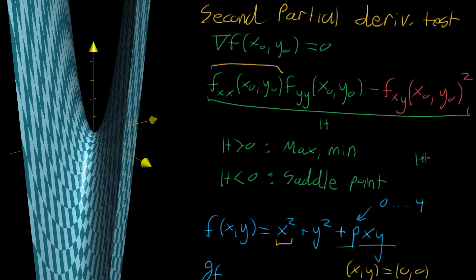Almost all cases, you'll find h is either purely greater than zero or purely less than zero. As an example, let's apply this to our specific function where p is some constant ranging from zero to four.